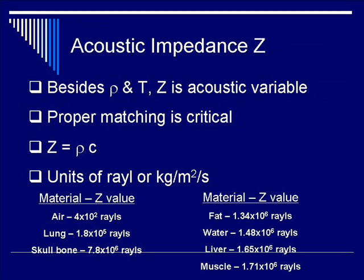In terms of biological soft tissues, you see that they fall in a very tight range. Starting with fat, you have a Z value of 1.34 times 10 to the 6, increasing slightly to 1.48 for water, 1.65 for liver, and to 1.71 for muscle. Again, these values track the velocity of sound figures very closely, and there's no wonder that these numbers are so close.